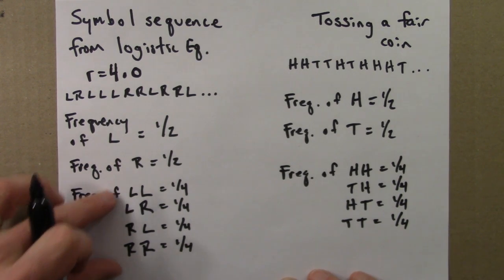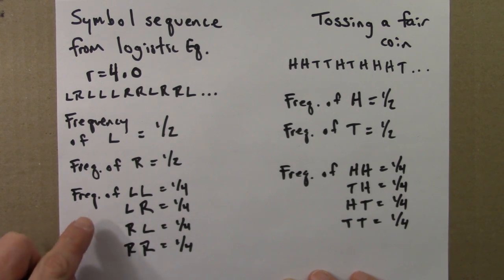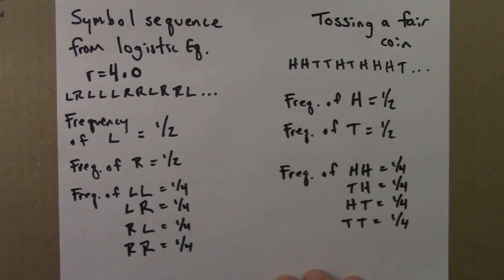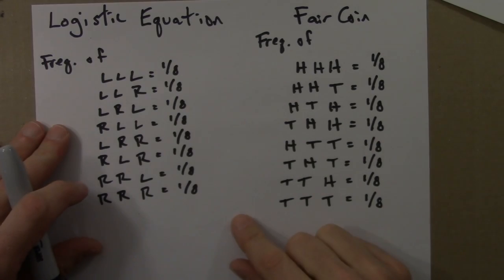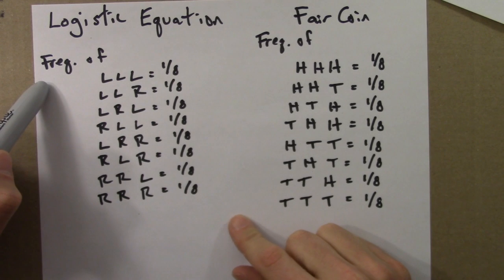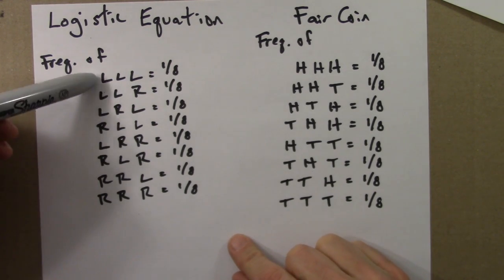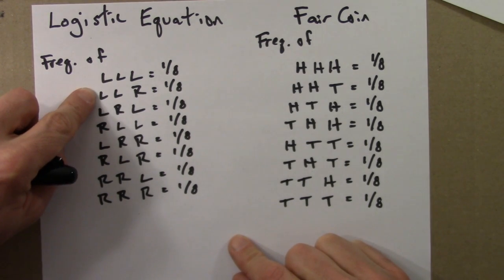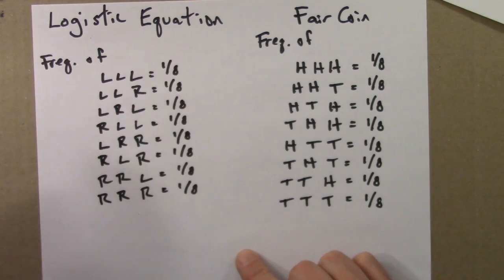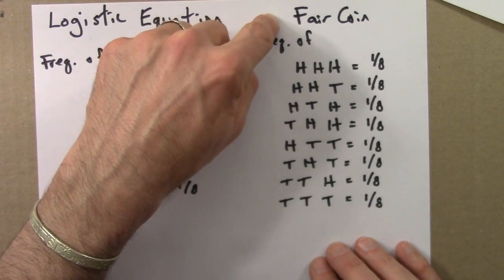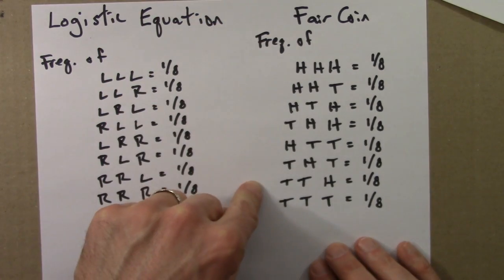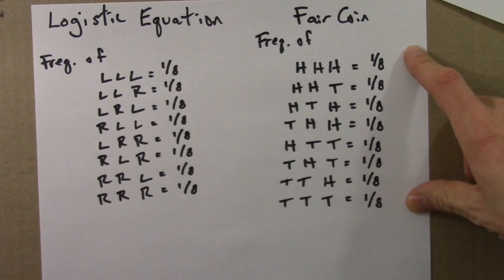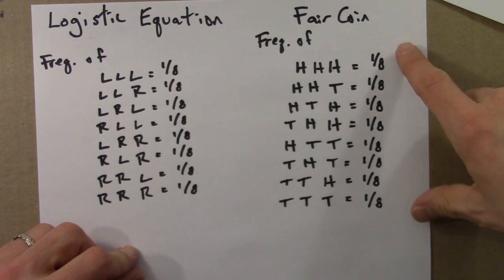We can probably guess the next step: ask about the frequency of all possible triples — L,L,L and L,L,R and L,R,L and so on. For the symbolic sequence from the logistic equation, there are eight possible outcomes of three consecutive symbols, and they all occur equally likely with a frequency of one eighth. The same story holds for the fair coin — there are eight possible outcomes of three consecutive symbols, and they all occur with equal frequency of one over eight.